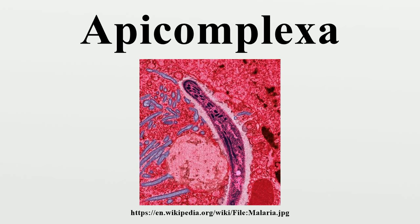The Apicomplexa are a diverse group that includes organisms such as the coccidia, gregarines, piroplasms, haemogregarines, and plasmodia. Diseases caused by Apicomplexa include babesiosis, malaria, cryptosporidiosis, cyclosporiasis, isosporiasis, and toxoplasmosis.